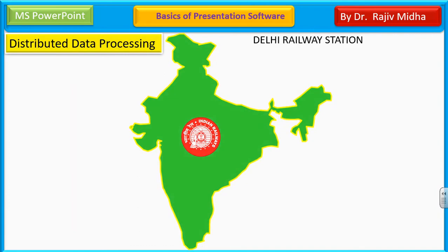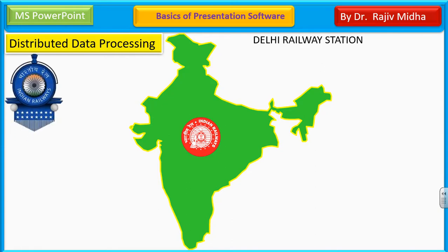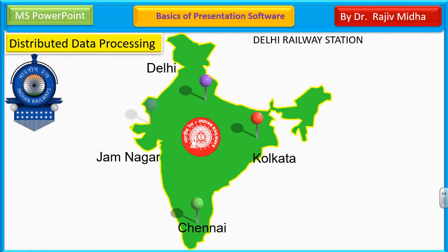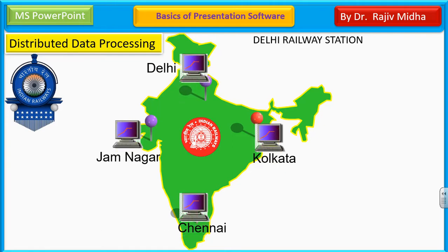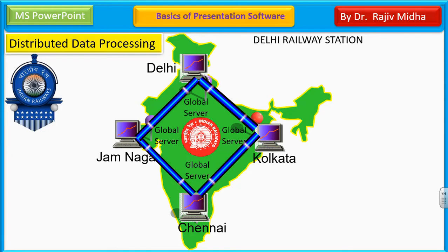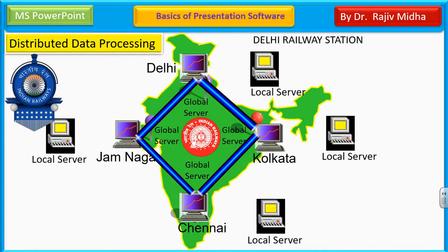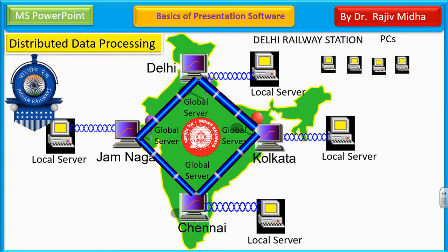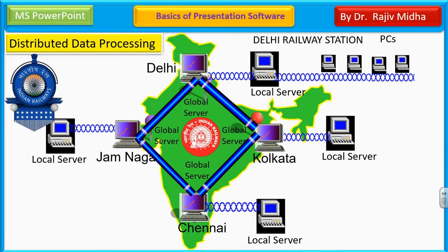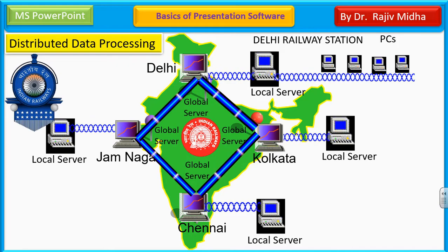یہاں پر کچھ ایک different طرح کی presentation کو میں show کروں گا which is distributed data processing by Indian railways. Delhi, Calcutta, Chennai and Jamnagar in Gujarat — یہاں پر چار computers کو آپس میں interconnect کیا جا رہا ہے۔ یہ computers global servers ہیں، ان کے ساتھ local servers attach کر دیے گئے۔ ان local servers کے ساتھ اب Delhi railway station کے اندر PCs کو بھی attach کیا جا رہا ہے۔ So students کو اگر ہم نے distributed data processing کی concept کو explain کرنا ہے، it can be of great help to you.